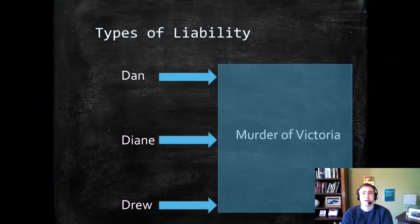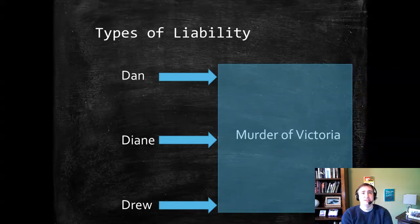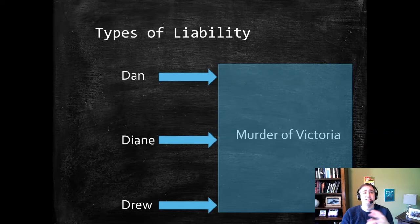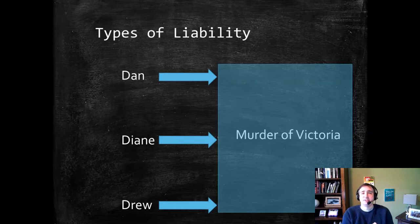Today I'm going to talk about accomplice liability. Up until now we've been operating in a very strange world as far as criminal law is concerned, where everyone is an individual island and we're assessing their criminal culpability based on their individual actions and only their individual actions.